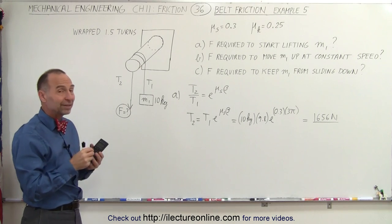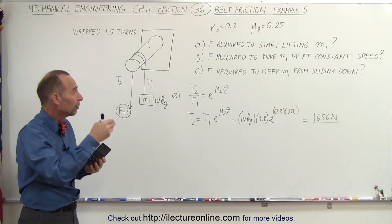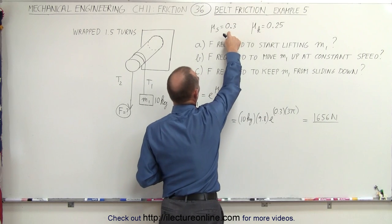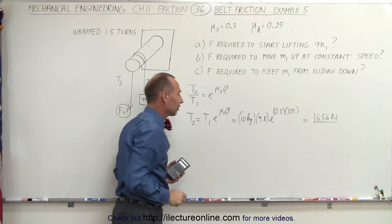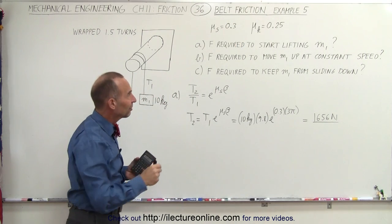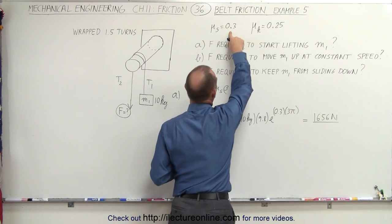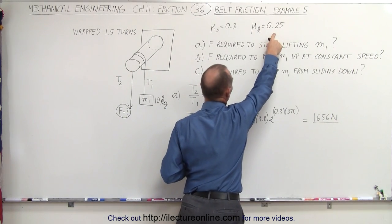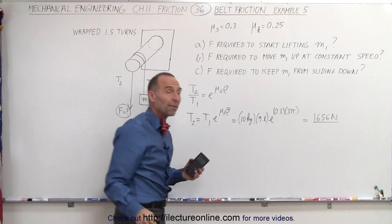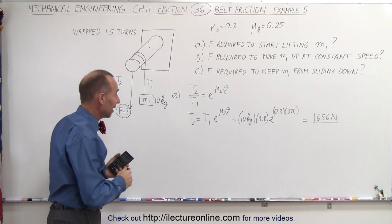Now let's see what it would take to keep M1 moving upwards once we've exceeded the force required to overcome the coefficient of static friction. Now you would think that, since there's such a small difference between the static coefficient of friction and the kinetic coefficient of friction, that it wouldn't drop by that much. But let's find out.